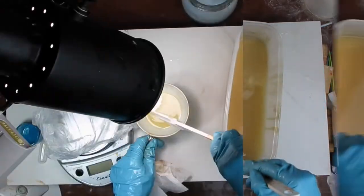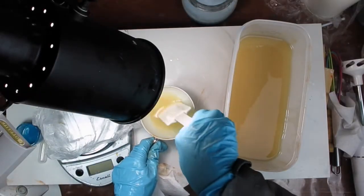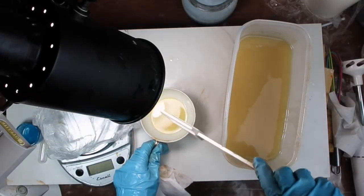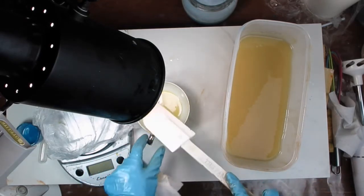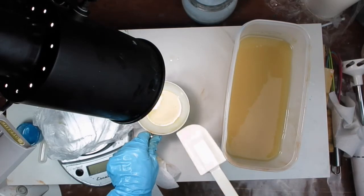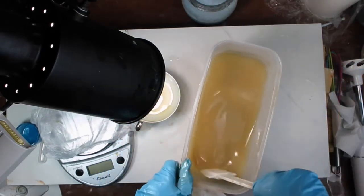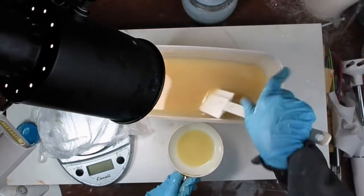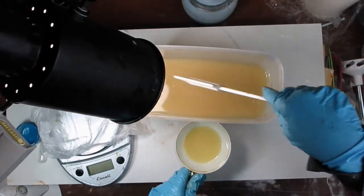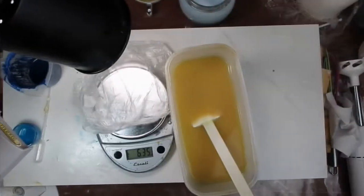I'm checking the status of the soap that I separated earlier and as you can see it has reached a light trace however my main soap batter has not reached any kind of trace yet it's still at emulsion phase so this tells me that the fragrance is interacting with the soap batter and causing it to thicken up a little bit.